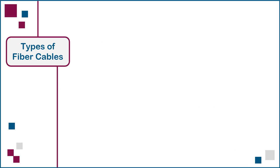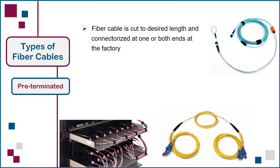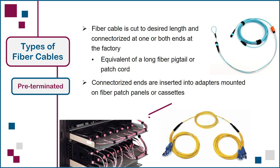The fourth type of cable construction is pre-terminated, where the fiber cable is cut to the desired length and connectorized at one or both ends at the factory by the manufacturer, essentially the equivalent of a long fiber pigtail or patch cord. After the cable is installed, the connectorized ends are inserted into adapters mounted on fiber patch panels or cassettes at one or both ends, which eliminates all connectorization time and minimizes termination errors. Note that pre-terminated or pre-term cabling was initially developed as a solution for data center computer rooms, but it can also be used in commercial building distributor rooms or any other environment where the required cable lengths can be accurately measured.